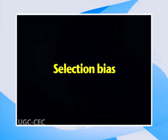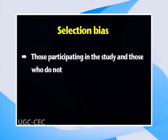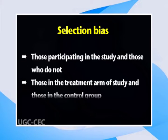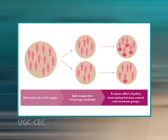Errors in measurement may be introduced by the observer — that is observer bias — the study participant — that is responder bias — or the instruments being used, such as weighing scales — that is instrument bias. Selection bias occurs when there is a systematic difference between those participating in the study and those who do not, and those in the treatment arm and those in the control group — where differences in characteristics are related to either the exposure or outcome under investigation. Randomized trials are theoretically less likely to be affected by selection bias because individuals are randomly allocated to the groups being compared.